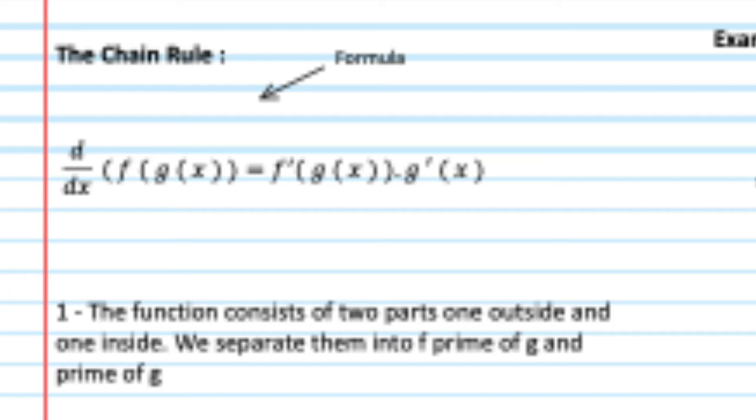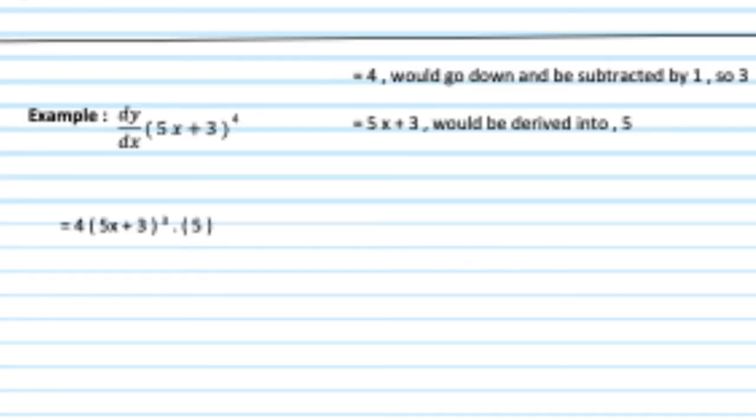So, dy over dx, parentheses 5x plus 3 to the power of 4. To do this, move 4 to the other side. So, 4 will go down. Then, since it's a superscript, similar to the power rule, minus 1. So, it will be 4 parentheses 5x plus 3 to the power of 3, and then we have to derive them. So, for the secondary function, which is 5x plus 3, 3 is a constant, becomes 0, 5x will become 5.